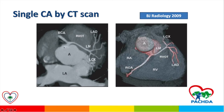This CT scan shows that this patient has a single coronary artery in which the right coronary artery and the left coronary artery are coming out of the same coronary artery. This similar view confirms that the left and right coronary arteries are coming from the same sinus.